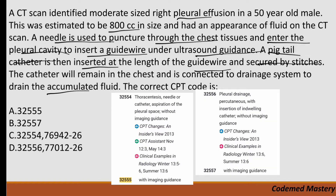Code 32557 is for pleural drainage percutaneous with insertion of indwelling catheter with imaging guidance. Code 32555 is used when a percutaneous needle or catheter aspirates fluid from the pleural space and then the catheter is removed before the patient leaves. Code 32557 is used when a catheter is placed percutaneously and left in. In our question, the catheter remains in the chest, so we must code 32557.